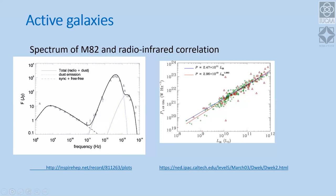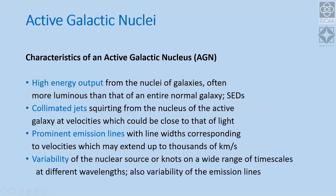When you look at starburst galaxies, the dust gets heated up by star formation and these are copious emitters in the infrared region of the spectrum. For the rest of the talk I'll focus on the other kind of active galaxies — those believed to be powered by supermassive black holes sitting in the nuclei of active galaxies.